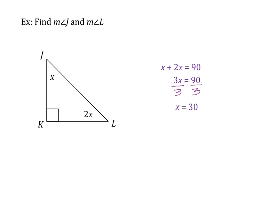X equals 30 is not the final answer, because the question asks for the measure of angle J and the measure of angle L. Plugging back in: the measure of angle J equals X, which is 30 degrees. The measure of angle L equals 2X, which is 60 degrees.